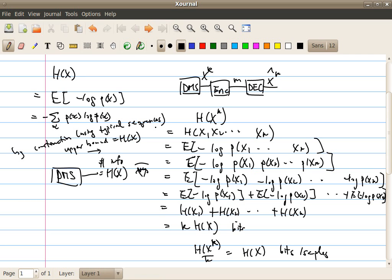Finally, we showed just last time that it's impossible to build any code that can compress the source at a rate smaller than that given by the channel entropy. Or in the sense that it's really impossible to compress the source below H(x) bits per sample.